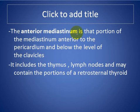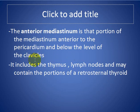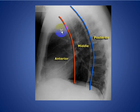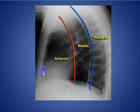The anterior mediastinum is the portion of the mediastinum anterior to the pericardium and below the level of the clavicles. It is anterior to the pericardium, and these are the anterior mediastinal structures.